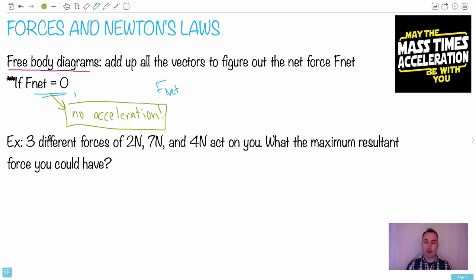This is an example I saw show up on an exam before. Three different forces. So two newtons, seven newtons, four newtons act on you. And here you're not told which way they act. Which means, you know, you might have the two newton this way. You could have the seven newton going that way. And then you can have the four newton maybe acting that way.